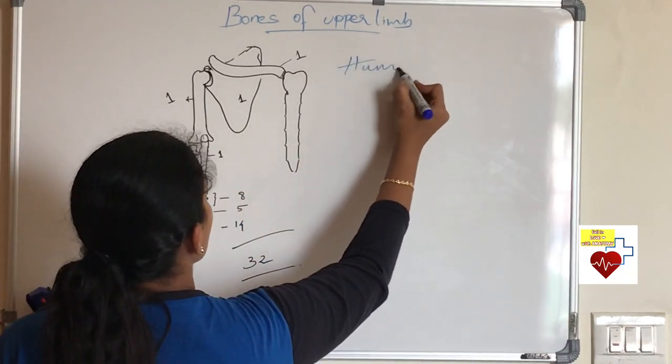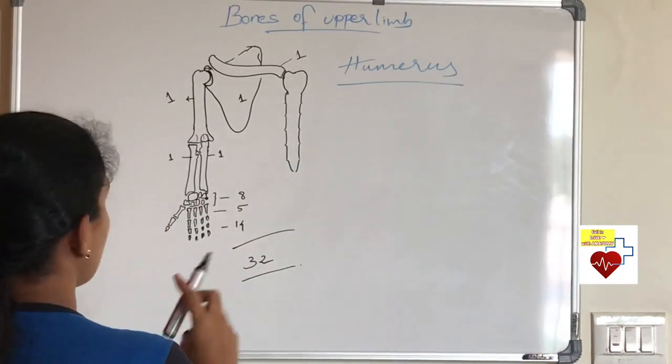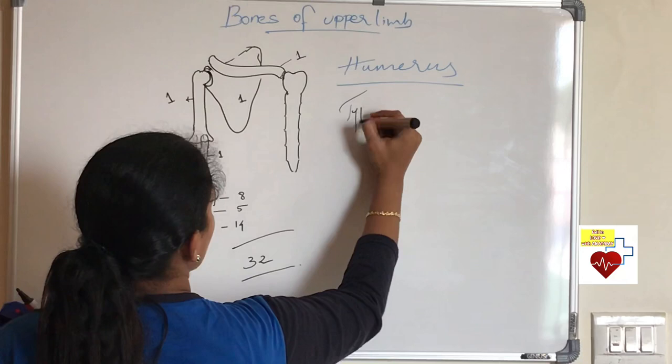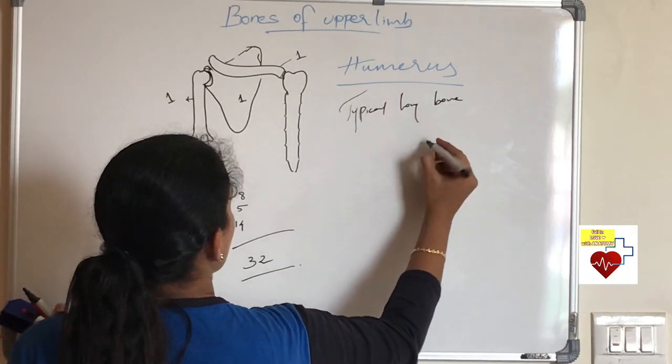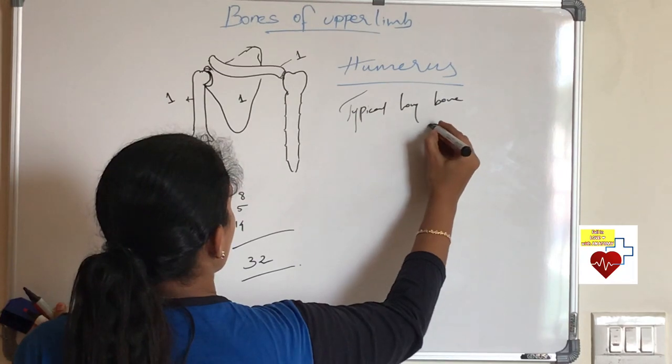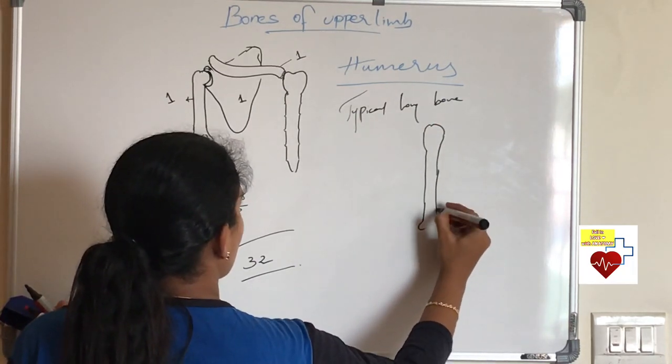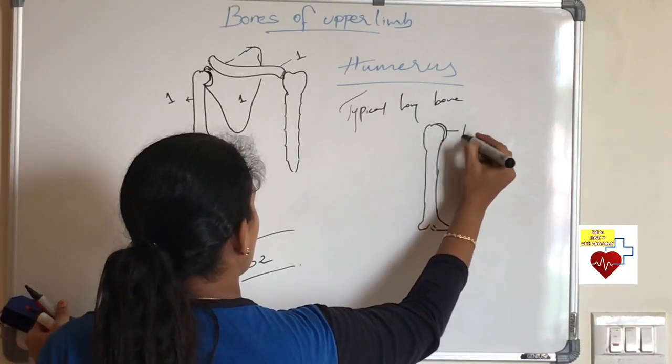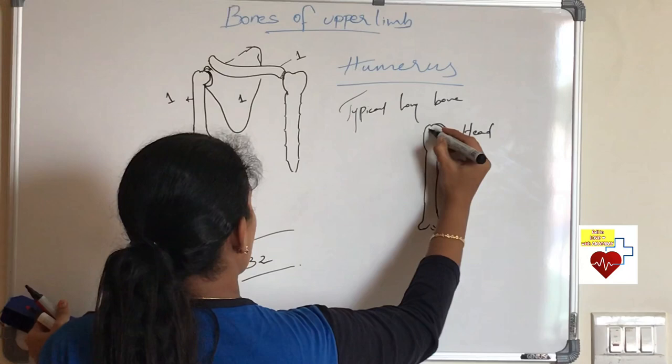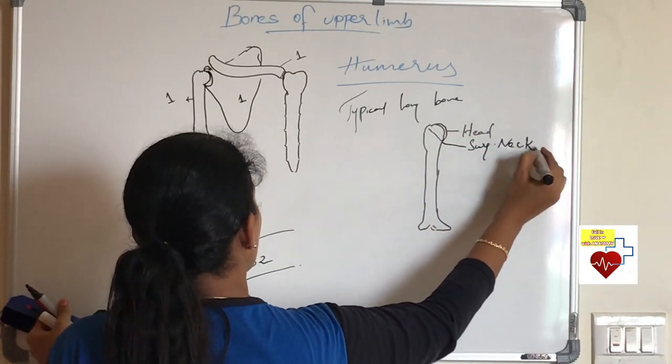Then comes our humerus. This is a typical long bone. Unlike clavicle and scapula, it is a typical long bone which has upper end, lower end and shaft. What is the upper end of humerus? It has head. And this head articulates with the glenoid cavity of scapula to form shoulder joint.